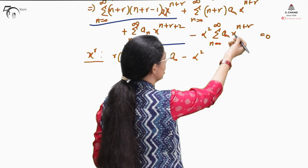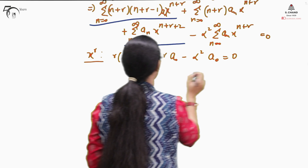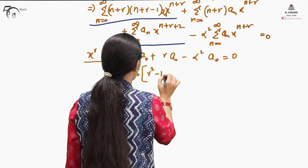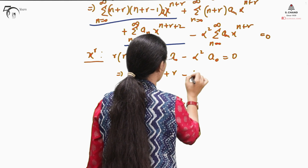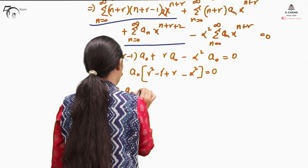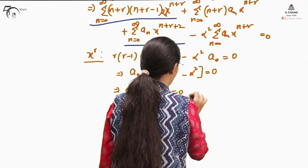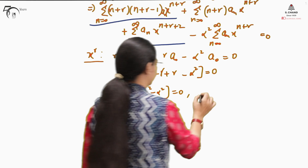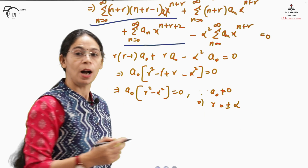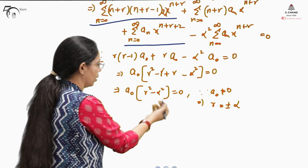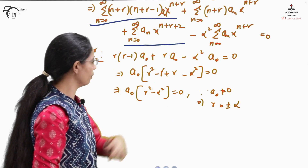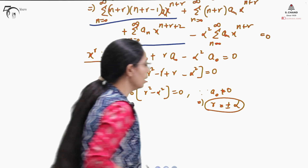The last term also contributes, giving -α²·a₀. Setting the total equal to zero and factoring out a₀, we get: a₀(r² - r + r - α²) = a₀(r² - α²) = 0. Since a₀ cannot be zero, we must have r² - α² = 0, giving r = ±α. This is the indicial equation, and r takes the values ±α.